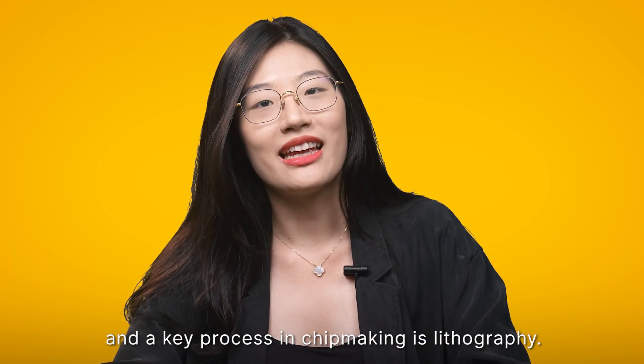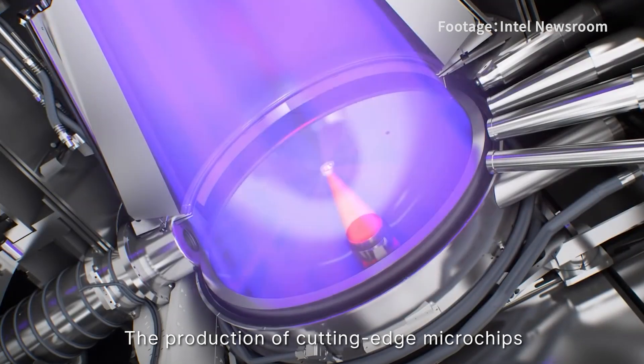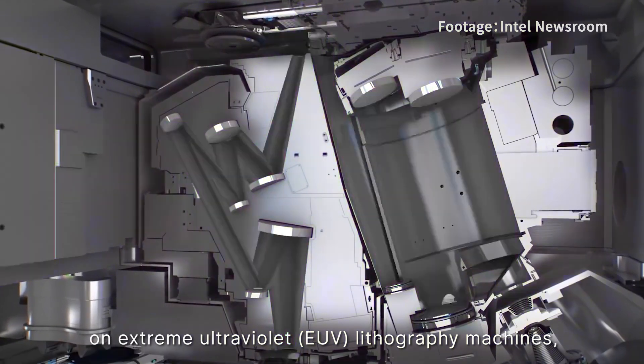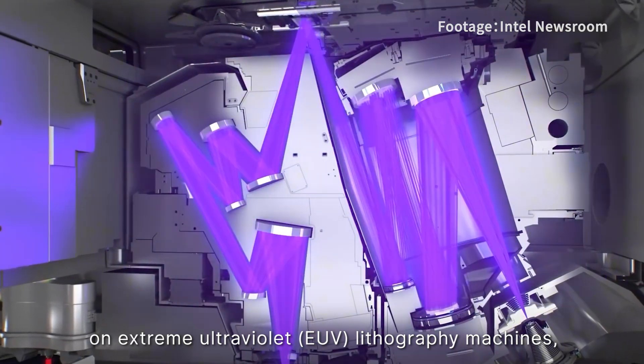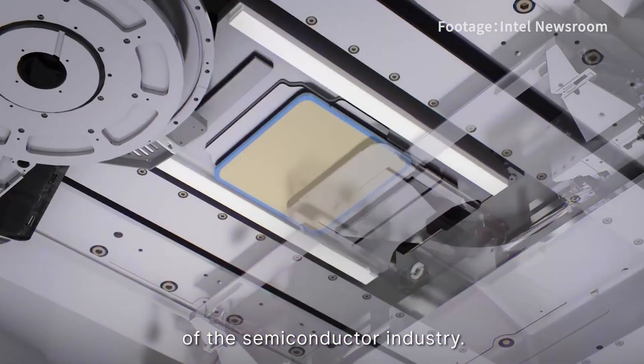A key process in chip making is lithography. The production of cutting-edge microchips below 5 nanometers is heavily reliant on extreme ultraviolet EUV lithography machines, which are considered the crown jewels of the semiconductor industry.